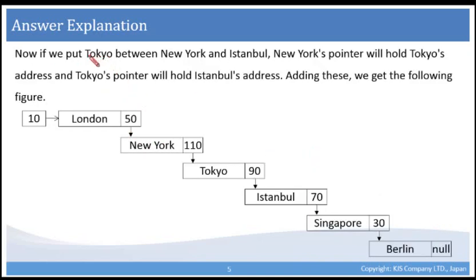Now if we put Tokyo between New York and Istanbul, New York's pointer will have to hold Tokyo's address, and Tokyo's pointer will have to hold Istanbul's address. Adding these, we get the following figure.